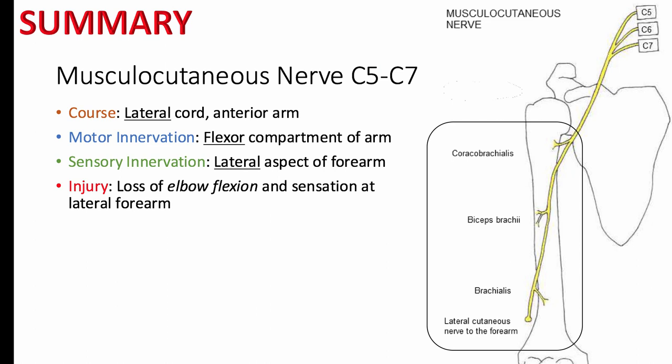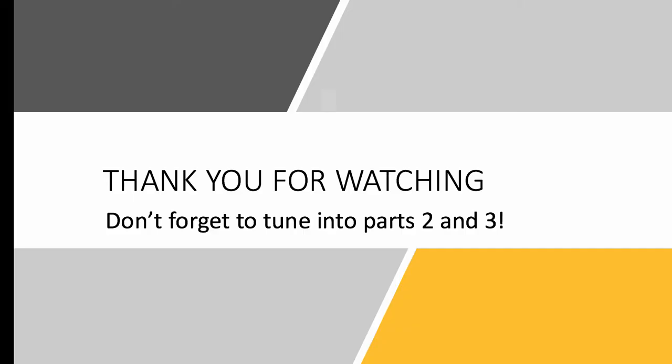Here's a summary slide of all the key take-home points. Remember for the musculocutaneous nerve, two big words: lateral and flexion. It arises from the lateral cord and is responsible for lateral sensation of the forearm. For Step 1 remember its primary role is flexing the elbow. And that's it. Thanks for tuning into part one of this three-part series. Don't forget to tune into parts two and three as we continue our brachial plexus adventure. See you soon. This is Kiran Mullur signing off.